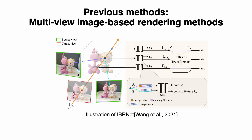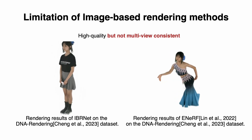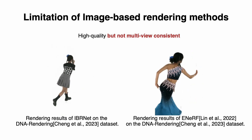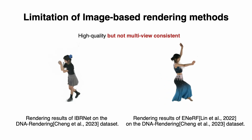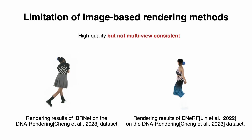Another category of methods, such as eNRF and IBRNet, employ multi-view image-based rendering methods. They start with adjacent viewpoint images of the rendering viewpoint each time, inferring the geometry and appearance of the rendering viewpoint. These methods typically render clear details, but since they reconstruct for each view rather than globally, they cannot ensure rendering consistency between different viewpoints. This is manifested in some floating-like artifacts at the edges, as shown in the video.